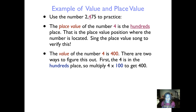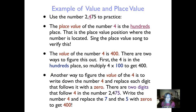The value of the number 4 isn't hundreds — 100 isn't the same as 400. To find the value, we know the 4 is in the hundreds place, so we can multiply 4 times 100, which gives us 400. There's also a strategy that might be a little easier: write down the number 4, then replace each digit that follows it with a 0. In 2,475, the digits 7 and 5 follow the 4, so replace them with zeros to get 400. That might be easier, especially when you're looking at really large numbers.